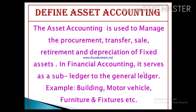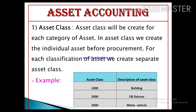In financial accounting, asset accounting serves as a subledger to the general ledger — just as we have learned in accounts payable or accounts receivable, where vendors are our subledgers. Similarly, in asset accounting, fixed assets are our subledgers of the general ledger. For example, building, motor vehicle, and furniture fixtures are subledgers.